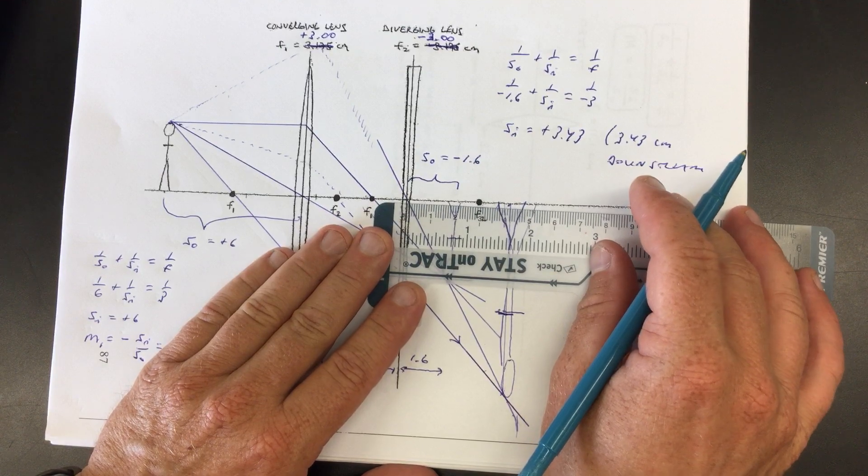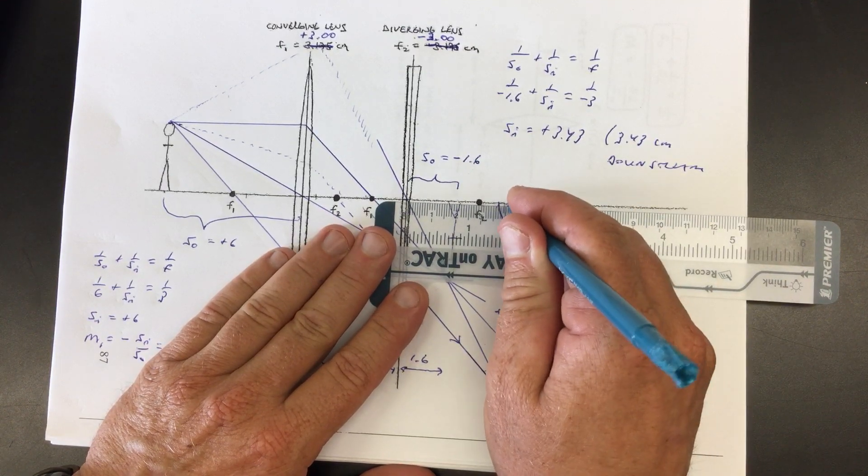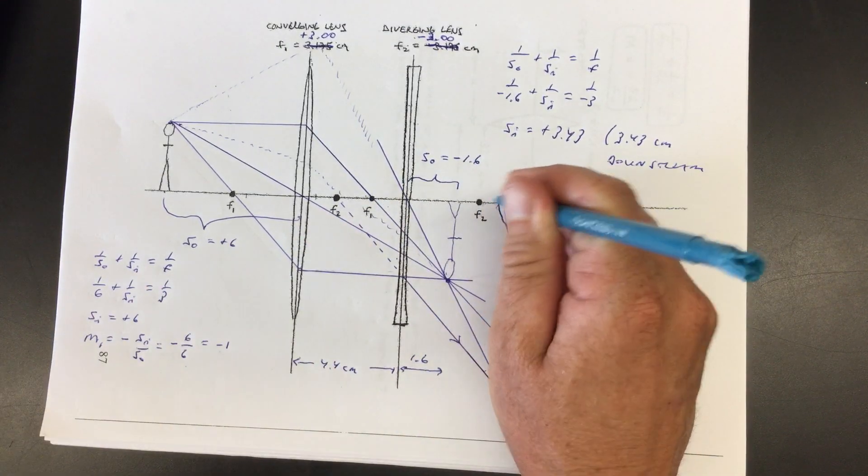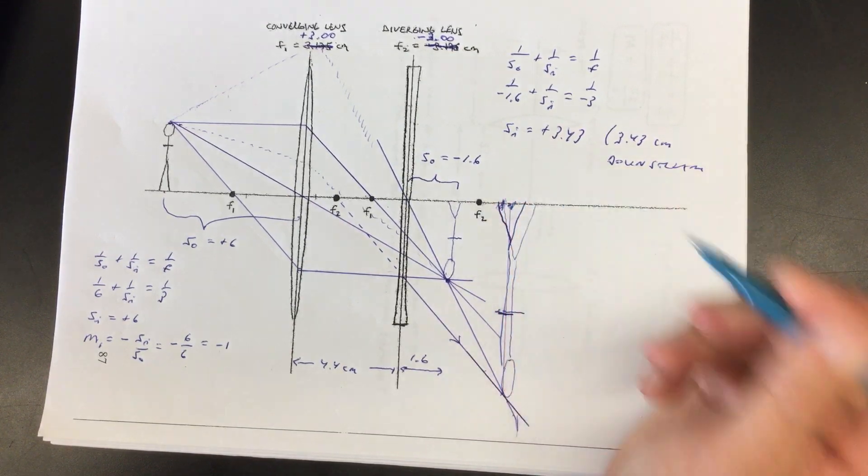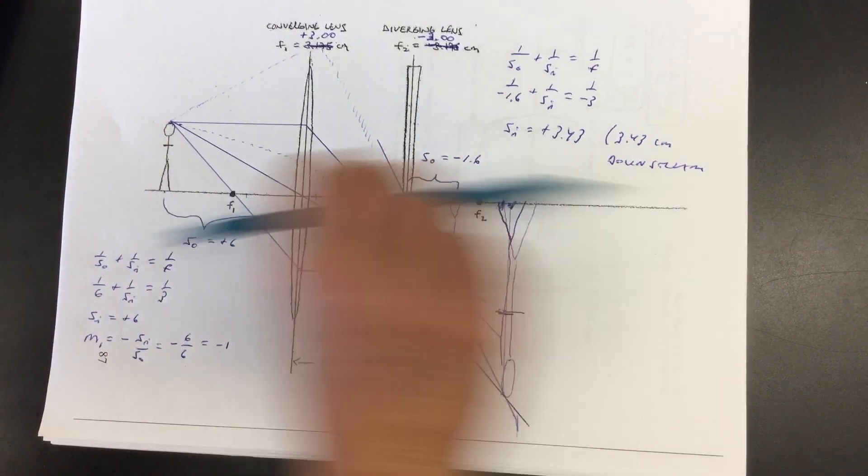So let's see how well that lines up with 3.43. Not bad. That's more like four kind of bad, not too bad. It's saying it should have shown up about here if I'd have done a perfect drawing, but instead it was here, right? So 3.43 that way.